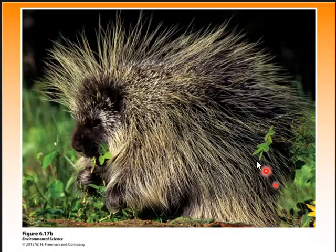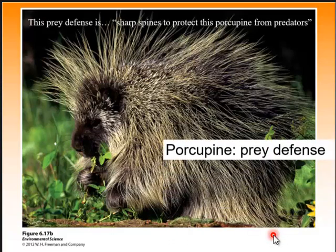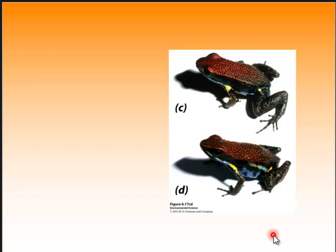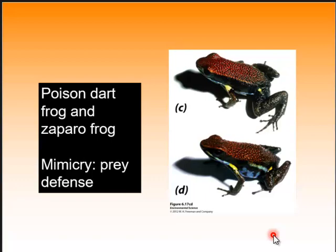A porcupine has really sharp spines to protect it from predators — that's a prey defense. One is the poison dart frog and the other is the non-toxic frog called the zaporo. The zaporo mimics the appearance of the poison dart frog as a prey defense, because a bird seeing the poison dart frog knows it tastes poisonous and makes it sick. Even though it's not a poison dart frog, the mimicry helps it escape predators.